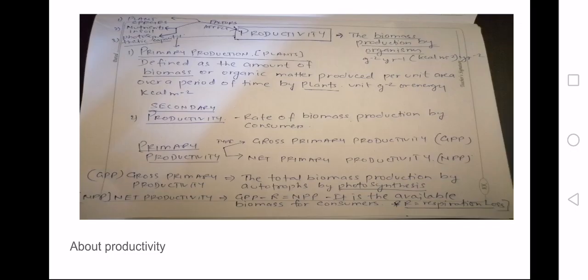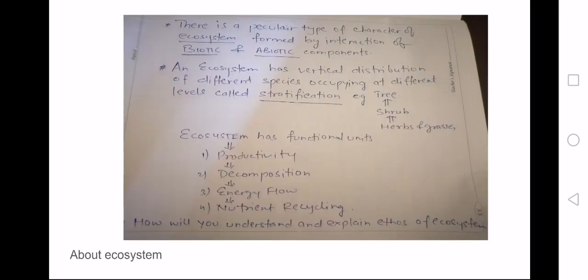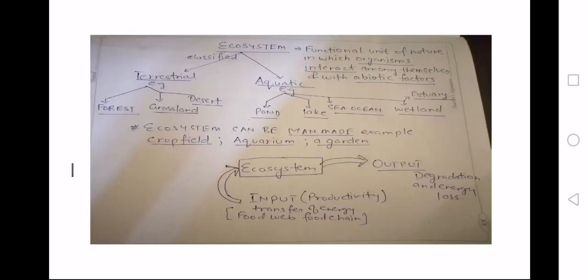Hello children, today we are going to learn about ecosystem. Let us now begin. Ecosystem is the functional unit of nature in which organisms interact among themselves and with biotic and abiotic systems. As you see on the flow chart, I have divided it into two parts.